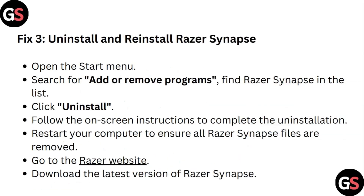Step 3: Uninstall and reinstall Razer Synapse. Open the Start menu and search for 'Add or Remove Programs.' Find Razer Synapse in the list and click Uninstall. Follow the on-screen instructions to complete the uninstallation. Restart your computer and ensure all Razer Synapse files are removed.